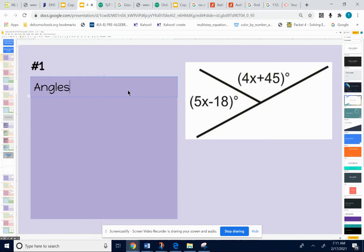Those add up to 180. So I'm going to write down my steps. Angles add up to 180. So I'm going to write an equation. If I know that those two angles add up to 180, I know that 5x minus 18 plus 4x plus 45 equals 180. That's the relationship we're going to use to write an equation.